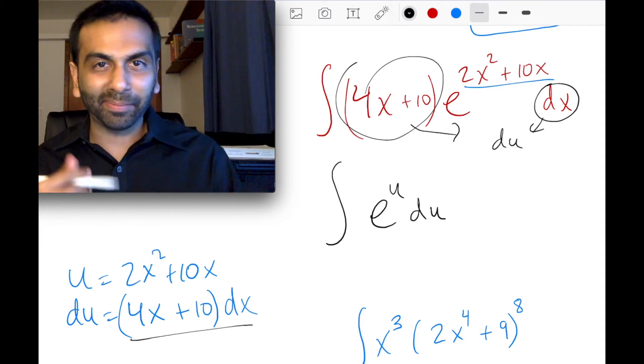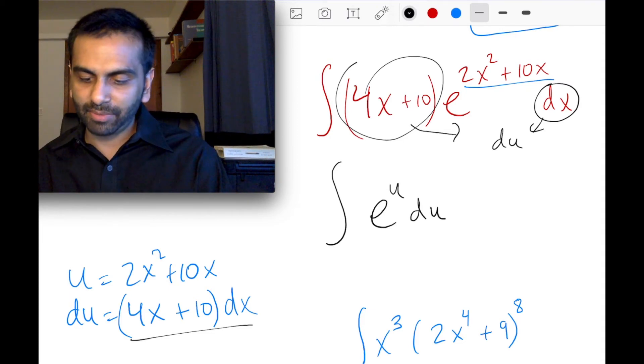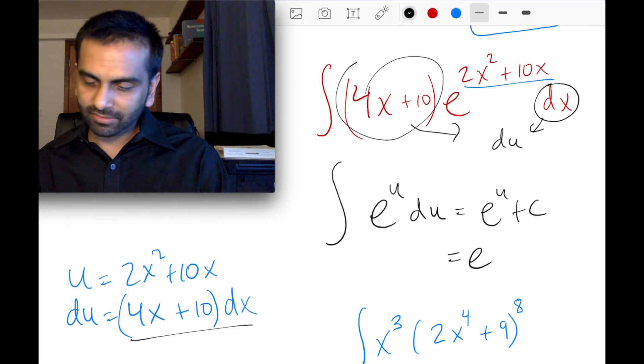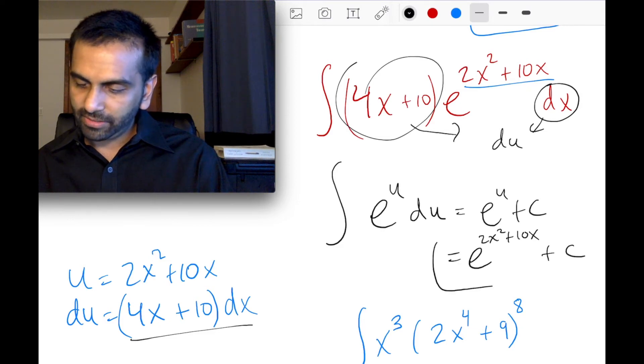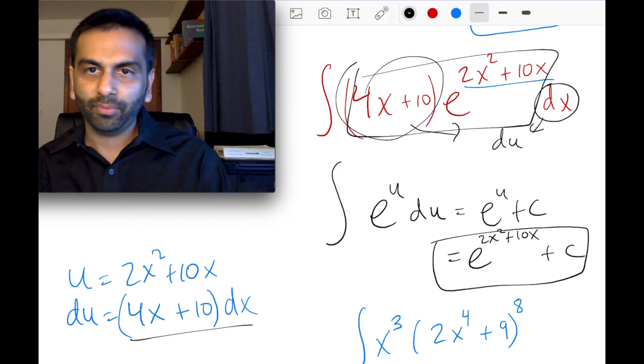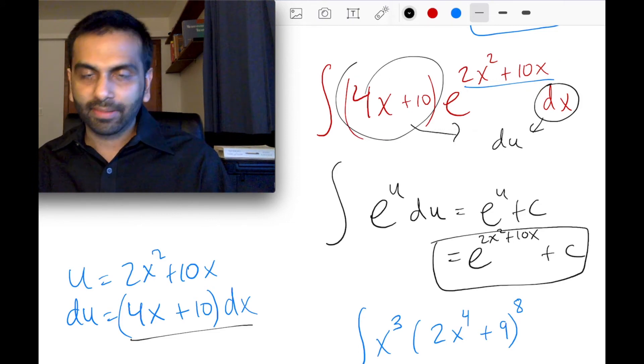So e to the u du, here it literally ended up being a very similar, the same type of problem. e to the u du, and the integral of this is just e to the u plus c. And then remember, the u is, in this case, 2x squared plus 10x. So, so there you go. This, and again, take the derivative of that and make sure you get this bad boy. And yeah, and then that works. So that's the overall process.